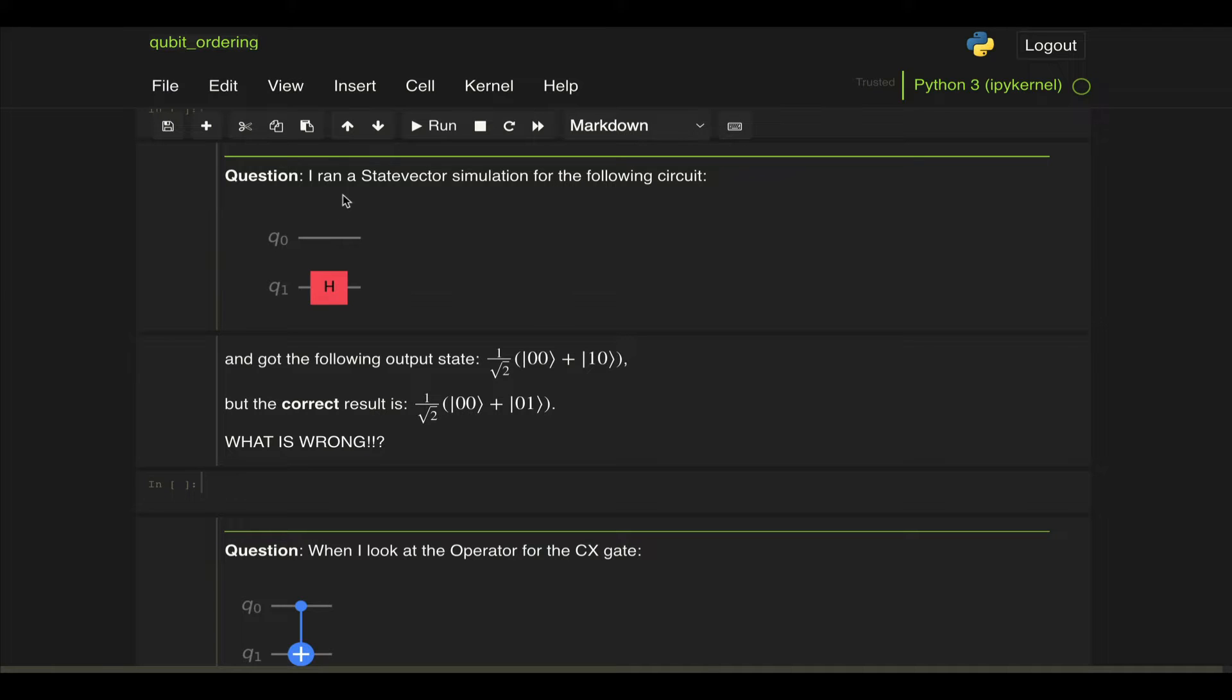So someone asks, I run a state vector simulation for the following circuit. You have no gates on the qubit here on the top and then a Hadamard gate on the qubit at the bottom. And then I got the following output state: one over two times zero zero plus one zero. But the correct result should be one over two times zero zero plus zero one. So as you can see, this person is confused because the qubit order in the second part of the superposition was reversed.